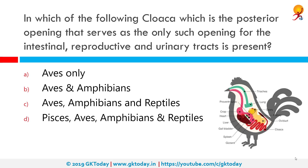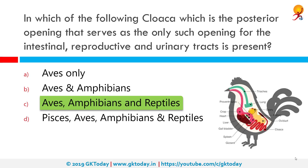In which of the following organisms is the cloaca present — the posterior opening that serves as the only opening for the intestinal, reproductive, and urinary tracts? They are not present in humans but are present in apes, amphibians, and reptiles. In animal anatomy, a cloaca is the posterior orifice that serves as the only opening for the digestive, reproductive, and urinary tracts of many vertebrate animals, opening at the vent.